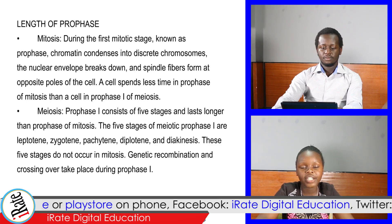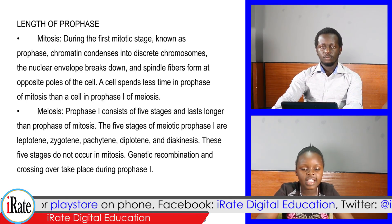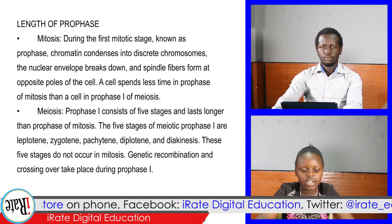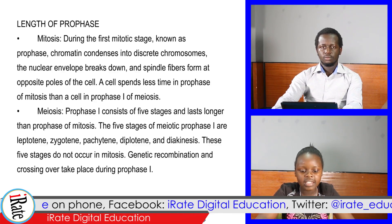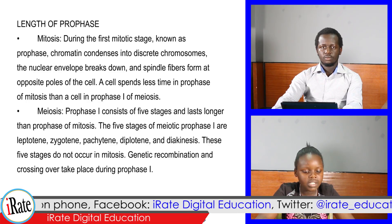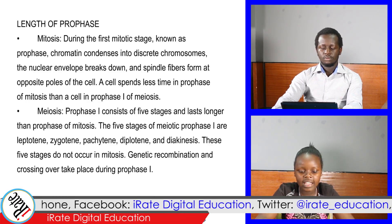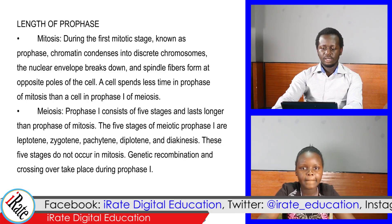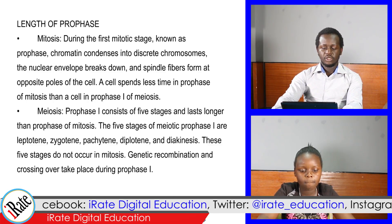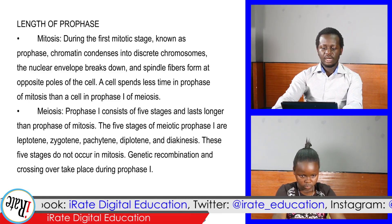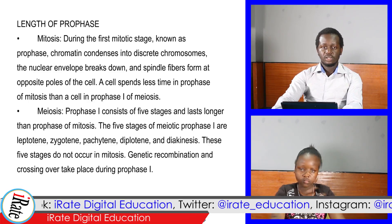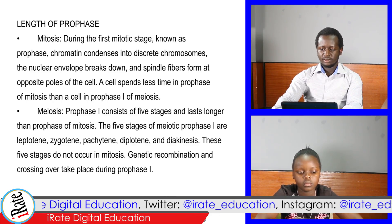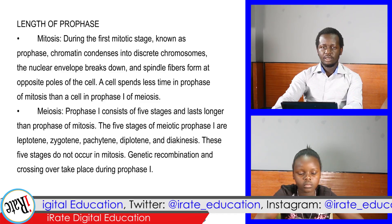Point 4: Length of prophase. In mitosis, during the first mitotic stage known as prophase, chromatin condenses into discrete chromosomes, the nuclear envelope breaks down, and spindle fibers form at opposite poles of the cell; a cell spends less time in prophase. In meiosis, prophase I consists of five stages and lasts longer than prophase of mitosis. The five stages of meiotic prophase are leptotene, zygotene, pachytene, diplotene, and diakinesis. These five stages do not occur in mitosis.